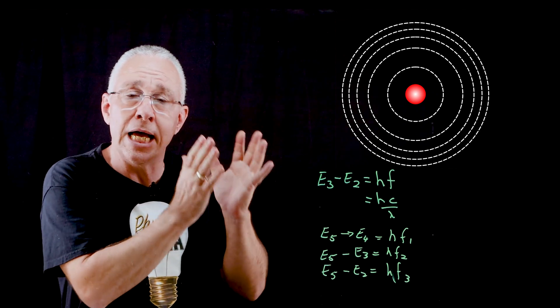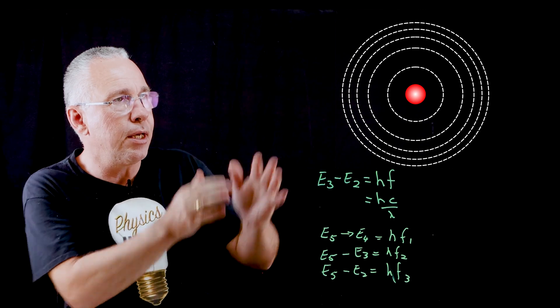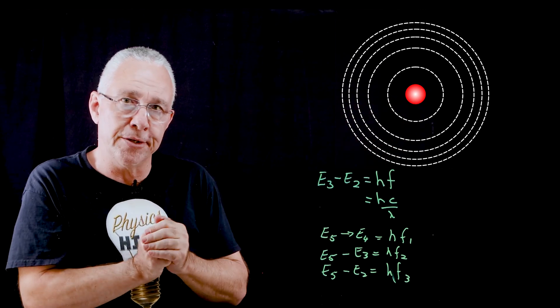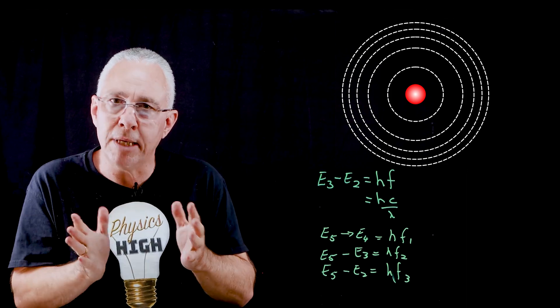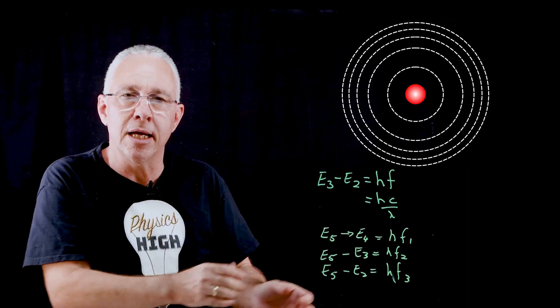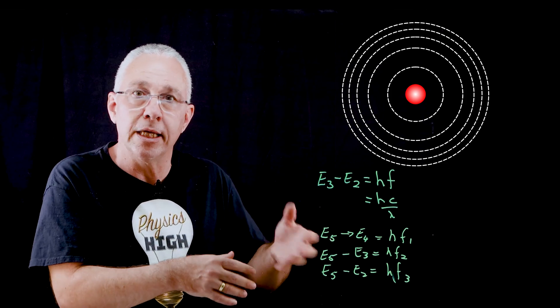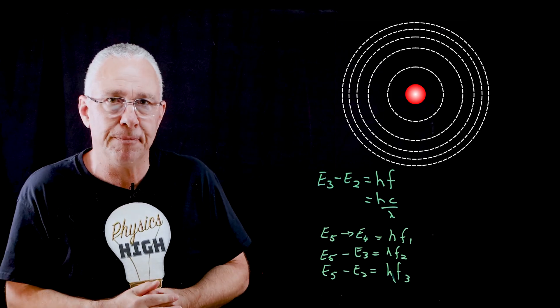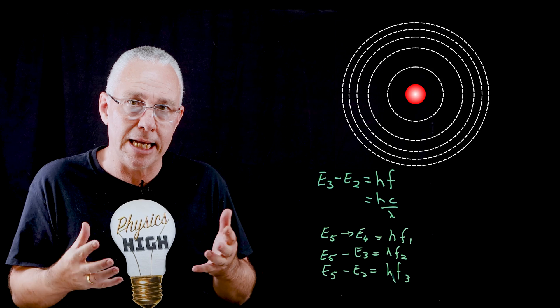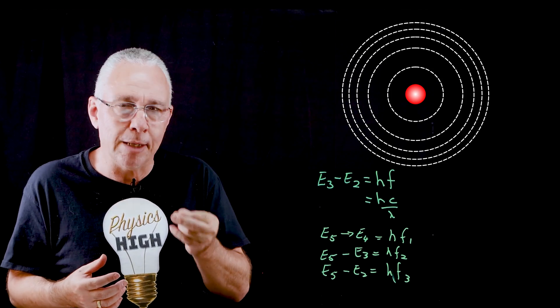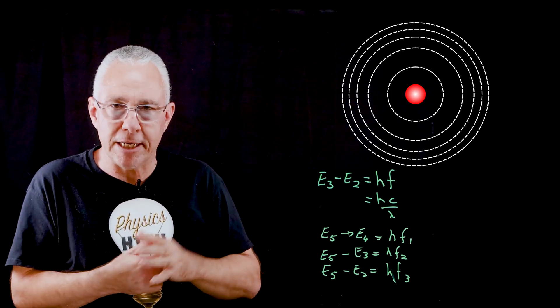Now, these frequencies are unique to hydrogen. The energy levels for each of the atoms in the periodic table are different, which means that the frequencies you get are unique to the element that you have causing the absorption and emission, which means our spectroscopy analysis allows us to identify the element that is causing the spectra.